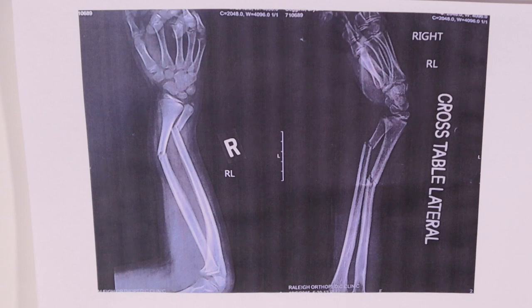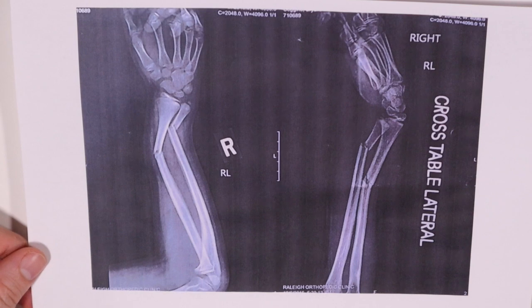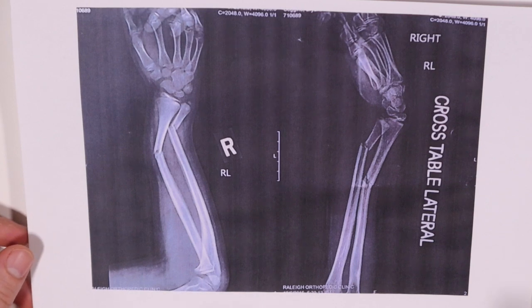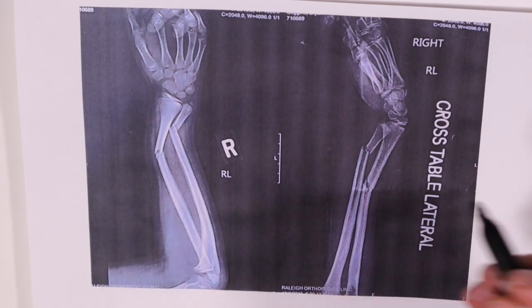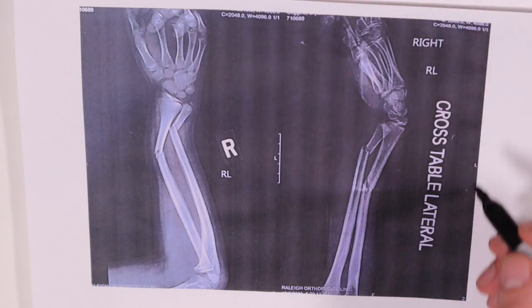All right, so now that we've run through the steps to describe fractures, let's do a little quick case study. So this is the AP and lateral radiographs of my son's forearm, probably about five years ago when he fell off of a trampoline. So let's describe this. So the first thing: is it open or closed? So you can't tell that from an x-ray, but trust me, I was there, it was closed.